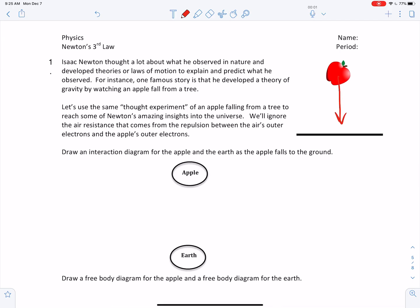So here we go. Draw an interaction diagram for the apple and the earth as the apple falls to the ground. So an interaction diagram just labels the interactive forces between two objects. So the apple and the earth are not touching. It's just falling to the ground. And they are interacting through one force, the force of gravity.